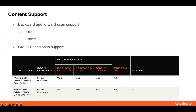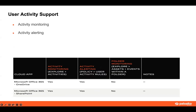SaaS Security API scans files and folders for both OneDrive and SharePoint, and both types of scans are supported. Forward scan is the process of scanning newly detected assets after detection points, and backward scan is scanning the assets before the detection point. Group-based scan is only supported for OneDrive. User activity support includes monitoring and alerting user activities. We don't have support for monitoring events within a folder for OneDrive and SharePoint. You go to the Explore Activities page to see users' activities.